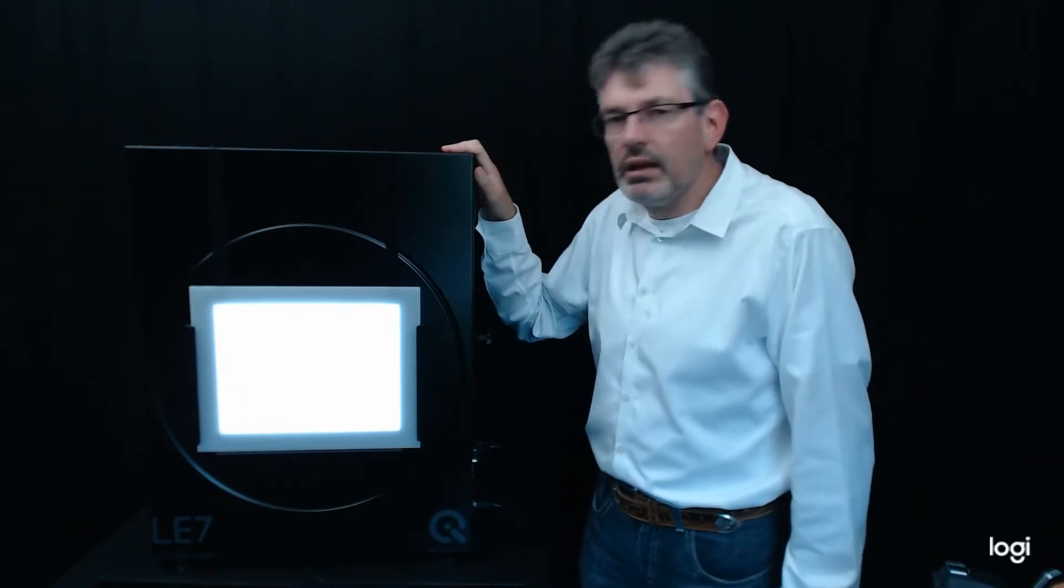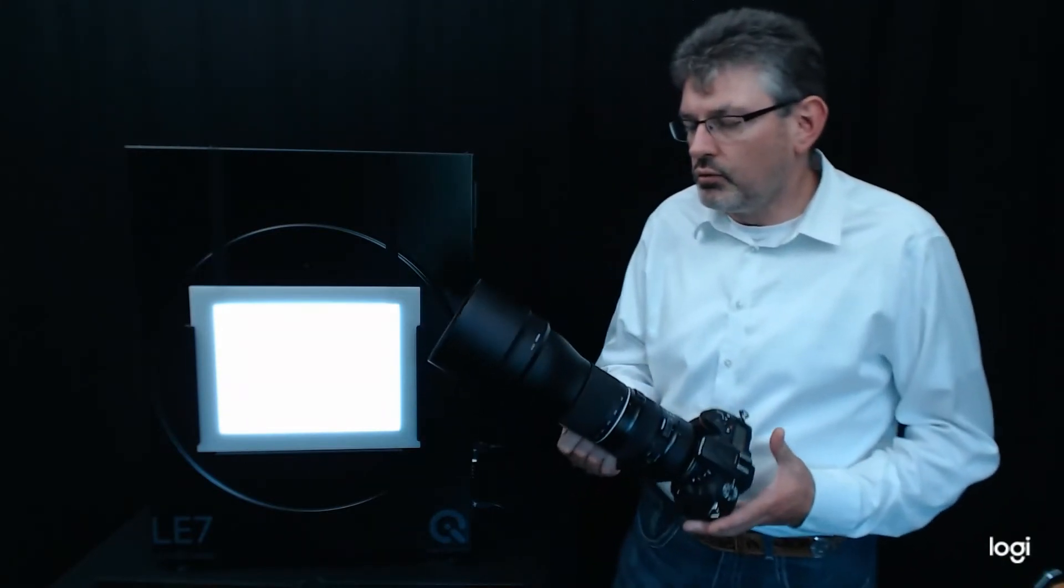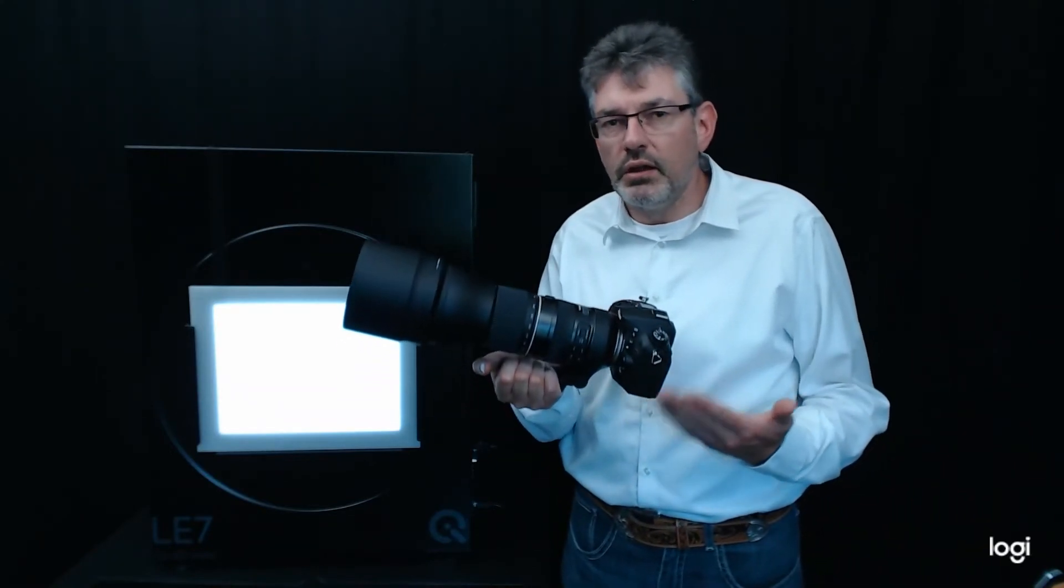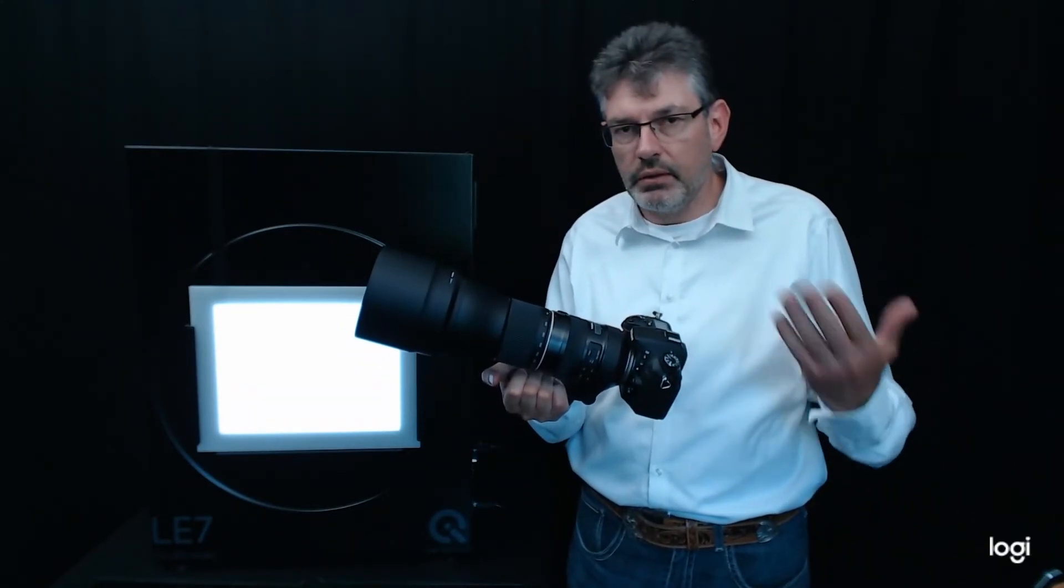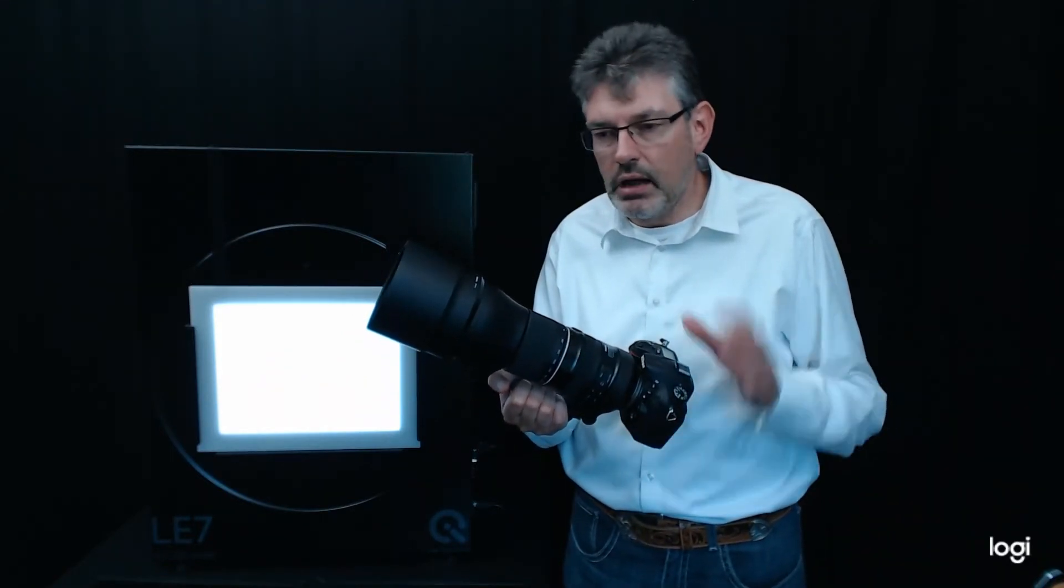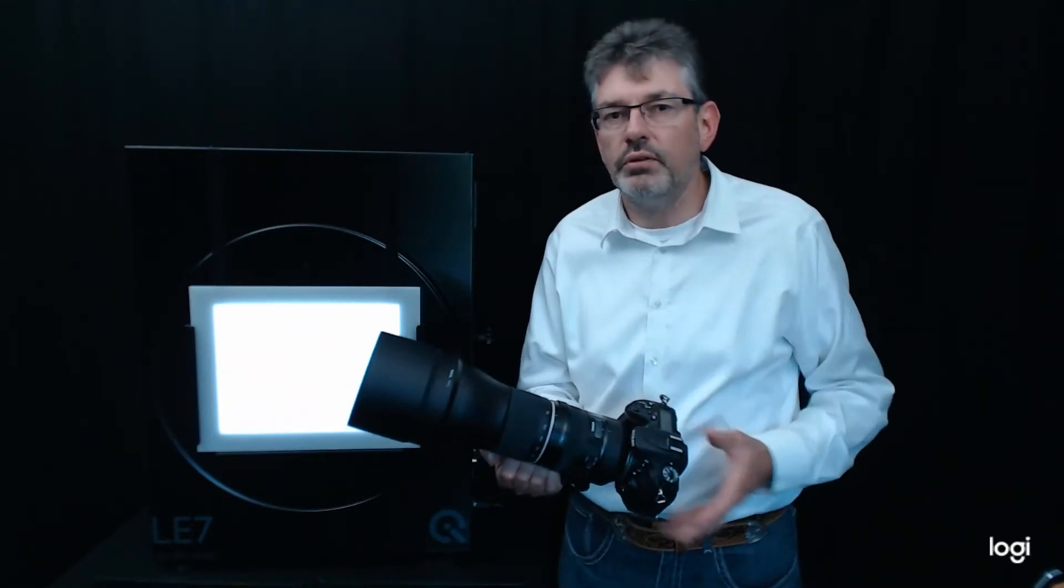Okay, what is the LE7 being used for? So one aspect is calibrating a camera. So for example, if you have a camera like this with a very big lens, all the other devices that we offer, the Cal devices, are too small on the output side. And therefore we need a larger output, which we can get with the LE7.